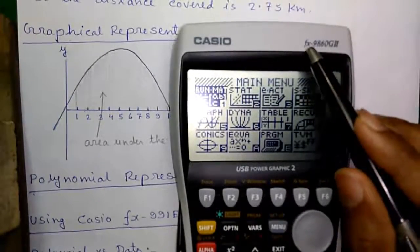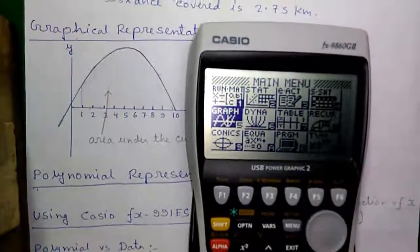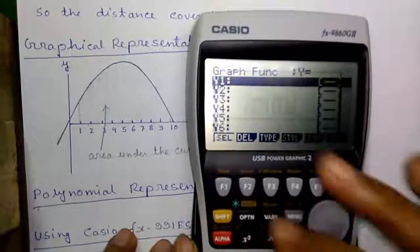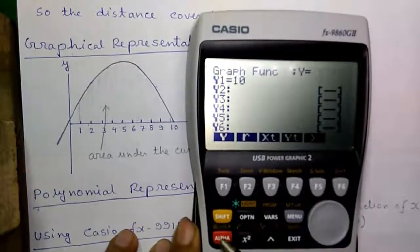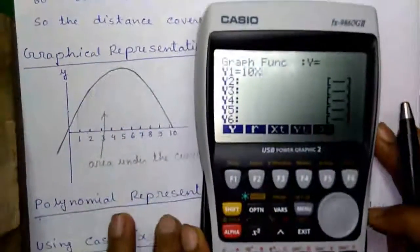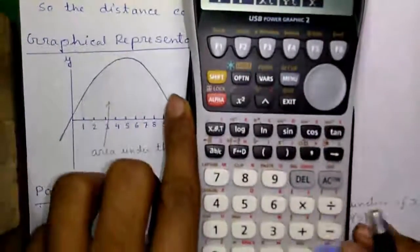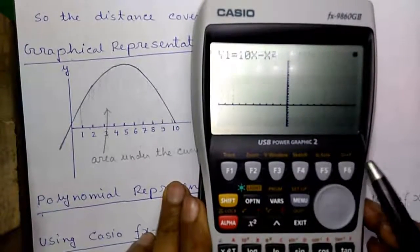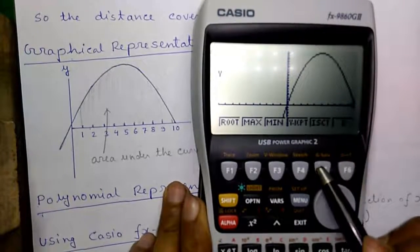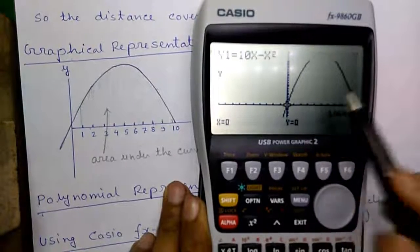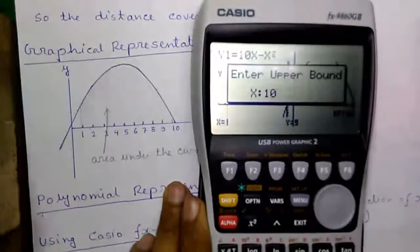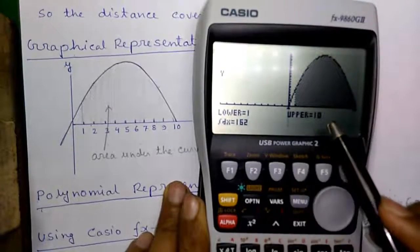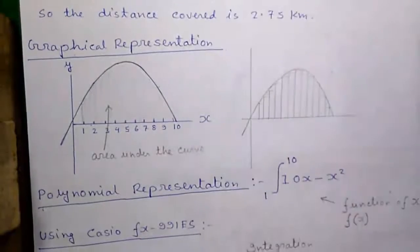If you have a graphical calculator like the FX-9860G2, go to graph mode and press execute. Enter the polynomial 10x minus x squared, press execute to enter, then press F6 to draw the curve. Press F5, F6, and F3 for area under the curve. Enter lower limit as 1 and upper limit as 10, and it will compute the area under the curve, which is 162 — the same result we got on the scientific calculator.